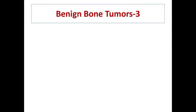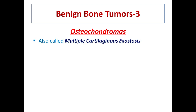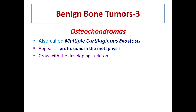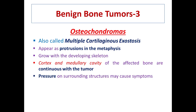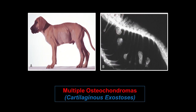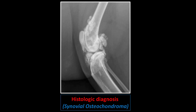Osteochondromas, also called multiple cartilaginous exostoses, appear as protrusions in the metaphysis and grow with the developing skeleton. The cortex and medullary cavity are continuous with the bone. They may cause pressure on surrounding structures and produce symptoms. Osteochondromas cease to grow when the skeleton matures. In these radiographs you can see exostoses that are osteochondromas, including a case of a dog where osteochondromas have developed in a synovial joint.